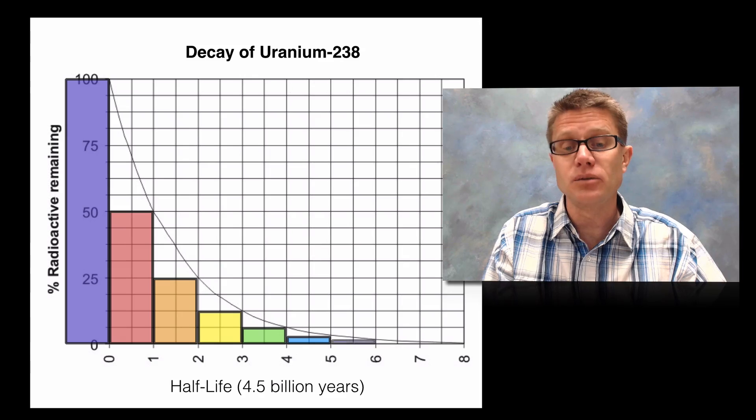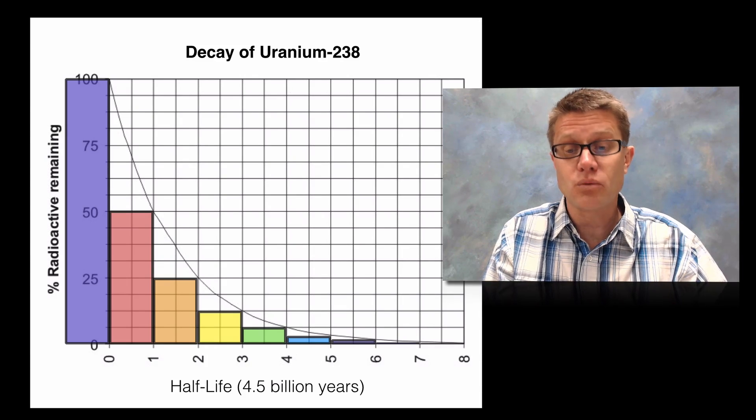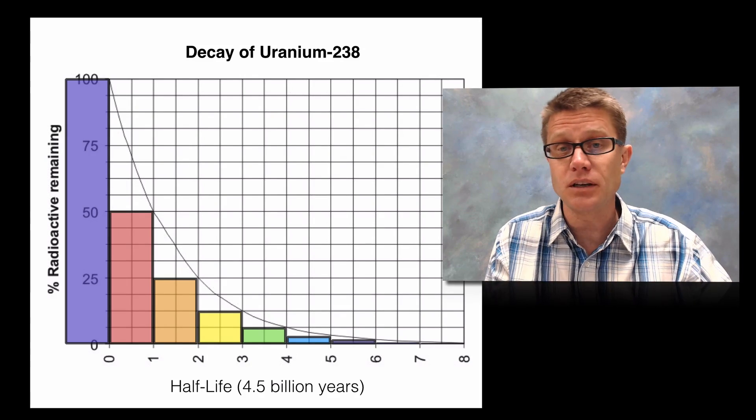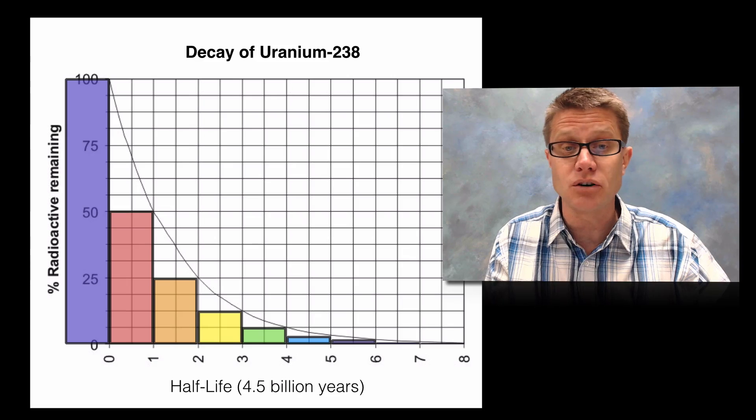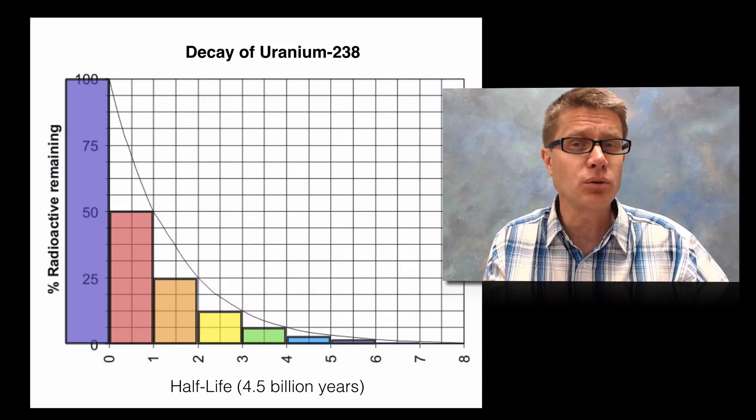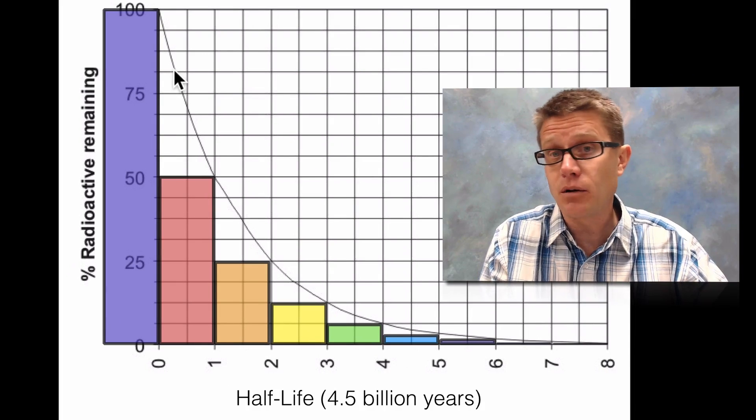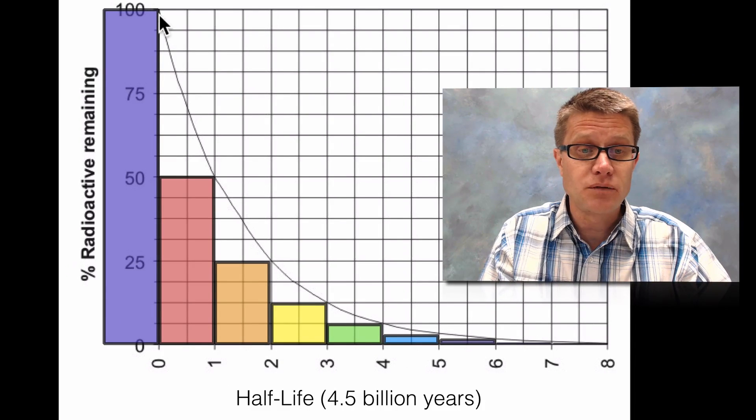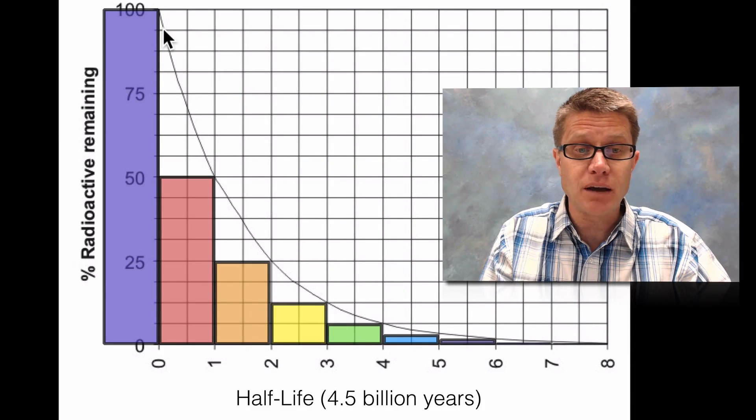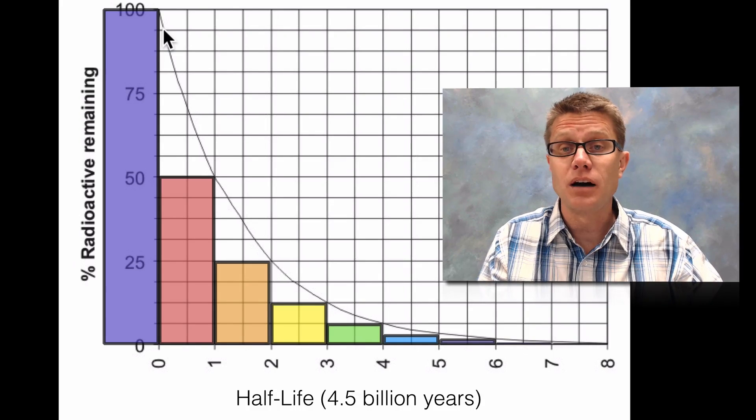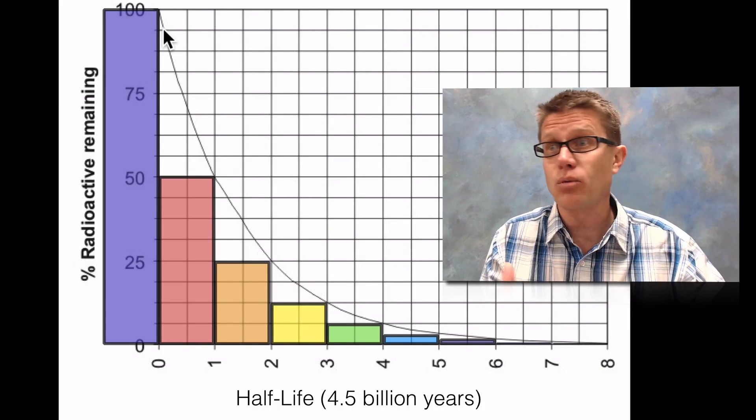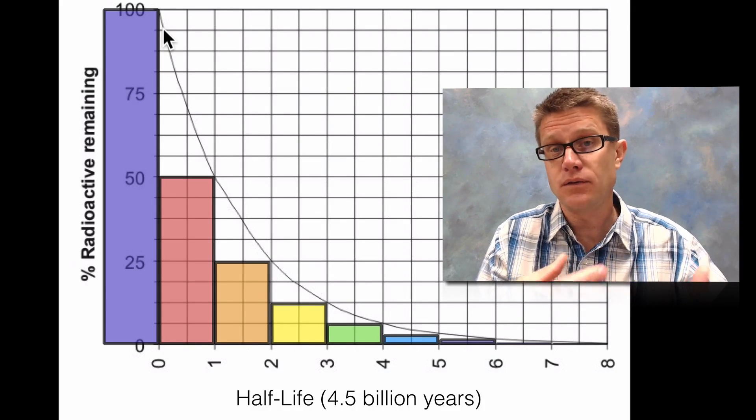And it will keep following that at a known rate because there is a known probability of each of these atoms decaying during that period of time. Now what is cool about this is scientists can find a sample of uranium-238. We could figure out how much of it has decayed and we could find it along this line. And that would tell us how long ago that that uranium-238, let's say a rock for example, had actually formed.